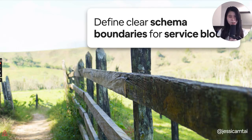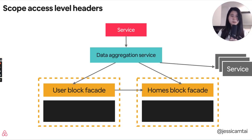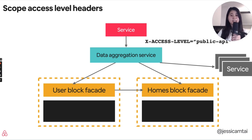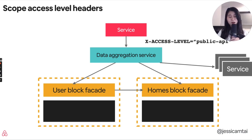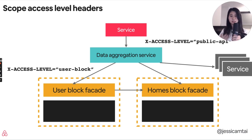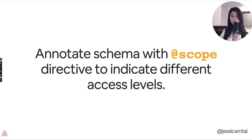We're able to better provide control for what the public API and the internal services can access. We can also define clear schema boundaries for these service blocks. An example of this is what we define as scope. Different levels of our SOA v2 have different scopes and different clients accessing them. For example, our data aggregation service may have an endpoint with an access level exposed to our public API. However, we might not want our blocks to be returning public API access data, so we can require that specific access levels be provided as headers to the user block facade. Combining these access levels with the scope directive annotated on our GraphQL schema allows us to indicate different access levels per field and per entity type.